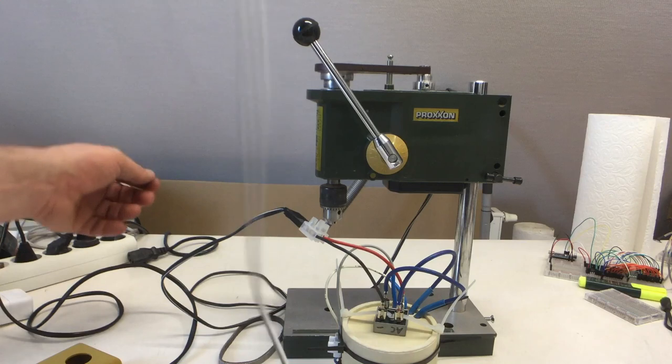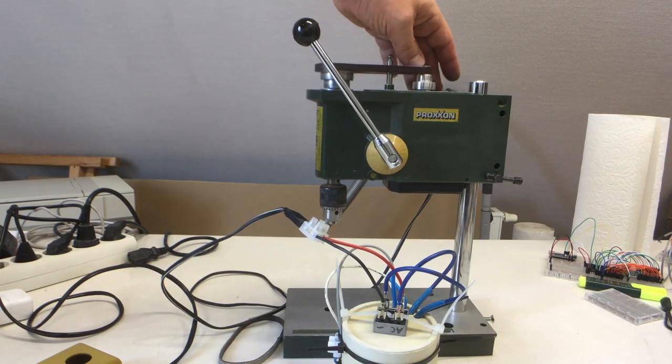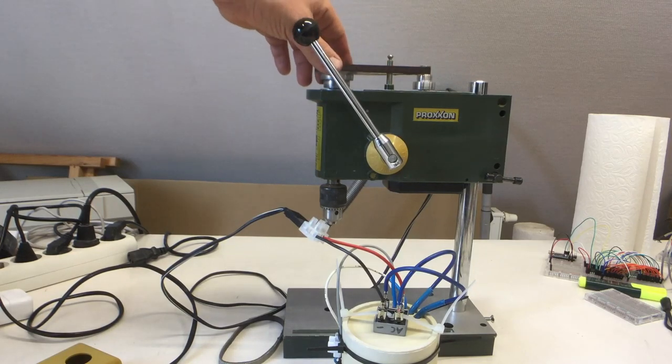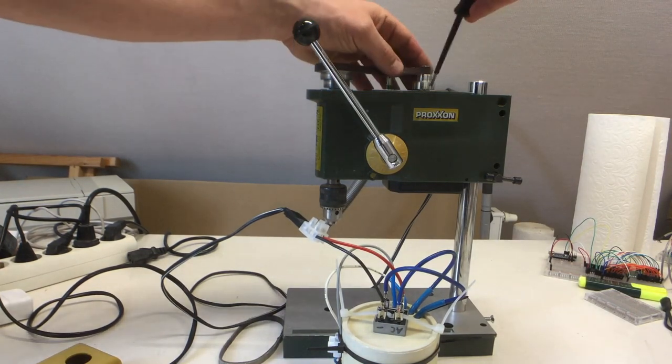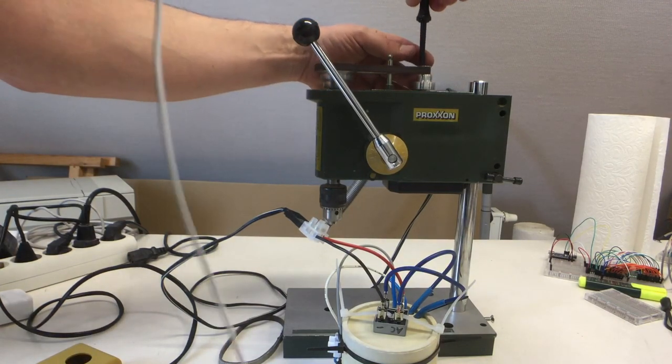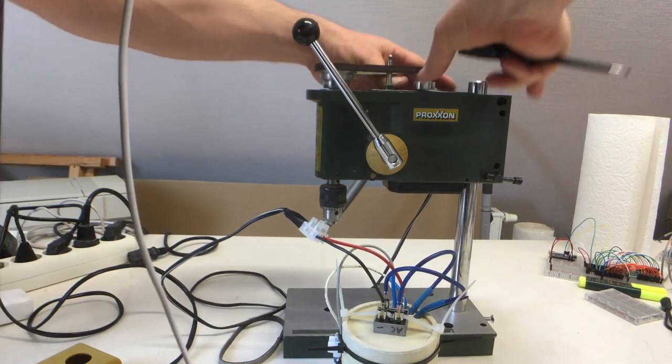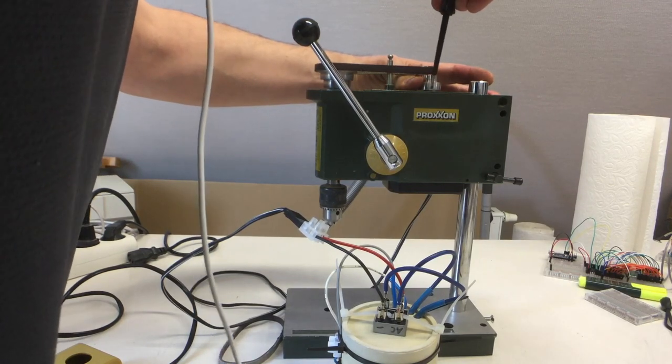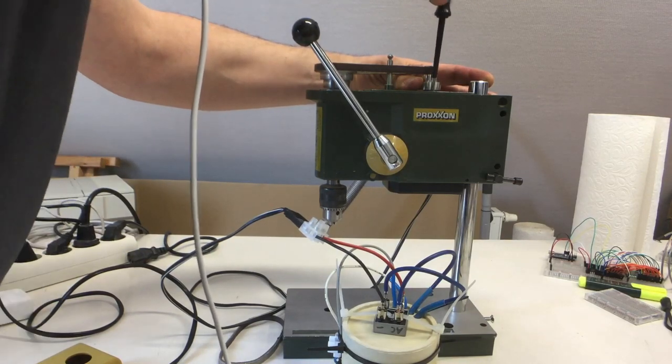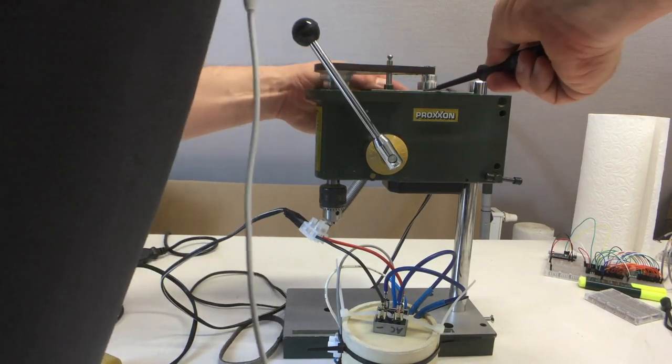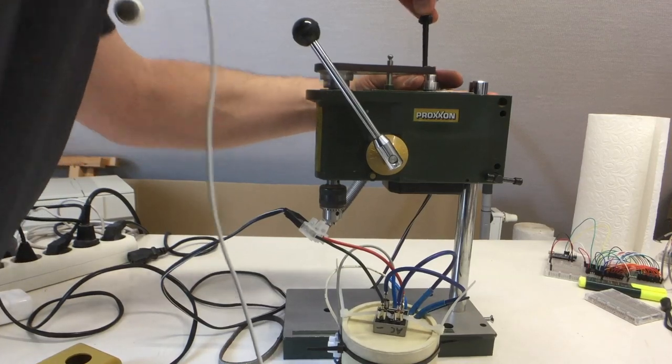But I guess you can adjust it, because there are two screws here to hopefully shift the axle a little bit back. Otherwise, this test will be cut short. Let's try that. So open up the screws, just a little. Move it backwards. Not too much. Tighten the screws. Oh yeah, and the screws, they don't have a round head. They have a square head. Try it again.